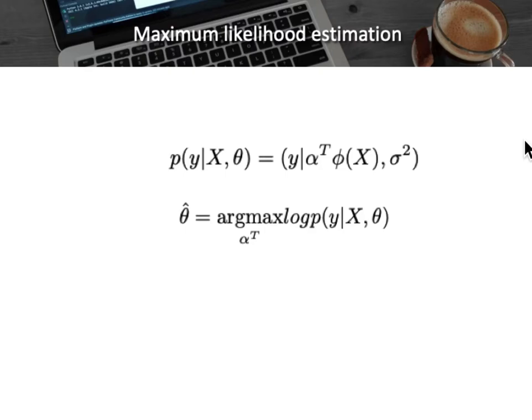We formalize this as finding the argmax of the probability function with respect to the parameters, whereas before we were minimizing the squared distance in classical linear regression. We maximize not the probability itself but its natural logarithm, in order to deal with underflow and overflow issues arising from multiplying many small probabilities together.